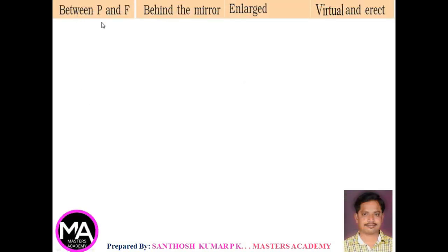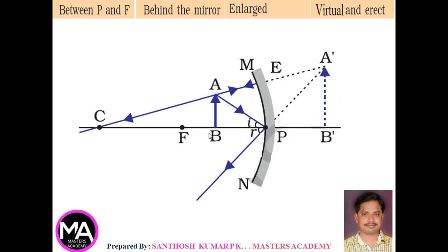Sixth case: when the object is kept between P and F, that is between the pole and the principal focus. AB is the object. The first ray is incident at any angle on the pole, obeying the law of reflection — angle i equals angle r. Another ray passes through the center of curvature. The two reflected rays will never meet on the left side, so we extend them backward. They appear to come from a point A'B' — a virtual image. When the object is kept between P and F, the image is formed behind the mirror, enlarged, virtual and erect.